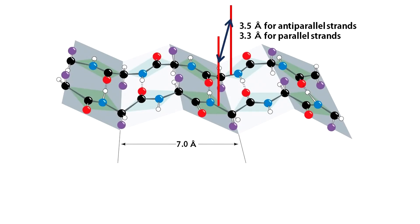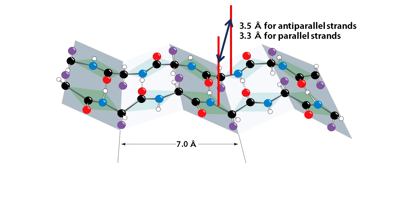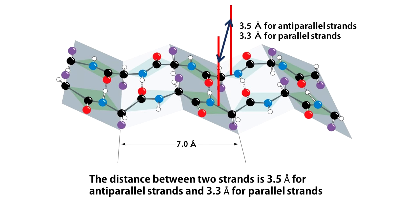Beta sheets have a rippled or pleated edge-on appearance. In this conformation, successive side chains of a polypeptide chain extend to opposite sides of the pleated sheet with a two-residue repeat distance of 7 angstroms. The polypeptide chains in a beta sheet can be up to 15 residues long, with the average being 6 residues. The distance between two strands is 3.5 angstroms for anti-parallel strands and 3.3 angstroms for parallel strands.